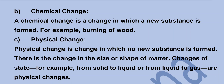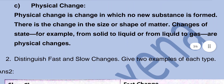New substance is formed with different characteristics. Physical change: a physical change is a change in which no new substance is formed. There is a change in the size or shape of matter. Changes of state, for example from solid to liquid or from liquid to gas, are physical changes — that is the water cycle.